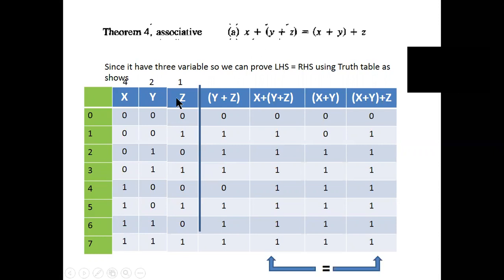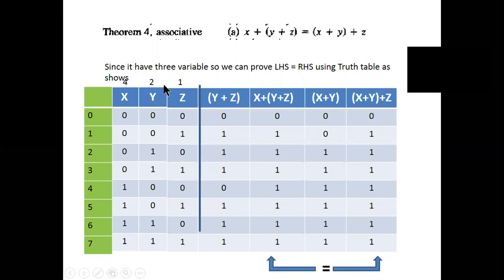Here three variables are there: x, y, z. We write the binary numbers 0,0,0 using columns with place values 1, 2, 4. The combinations go: 0 is 0,0,0 — 1 is 0,0,1 — 2 is 0,1,0, and so on.